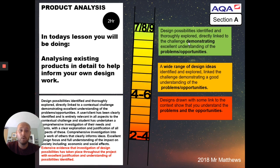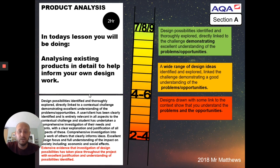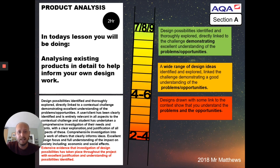This is the exam board criteria, to give you context and an idea of why we're doing this and how to make it work. I've highlighted the top level descriptor in red — marks from 8 to 10 out of 10 for this section. At the bottom it says: 'Extensive evidence — the investigation of design possibilities has taken place throughout the project' — this carries through the whole project, but this is one part of it — 'with excellent justification and understanding of possibilities identified.' By doing this task, you're identifying those possibilities, analyzing them, and the key word is justifying your findings and research. This ensures your project is not only a unique item, but that you've established there is a market for it and you understand what's already out there. So to clarify: for this lesson you are going to look at up to five existing products and analyze them using the ACCESS FM framework. Good luck.